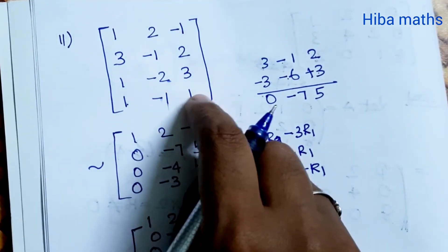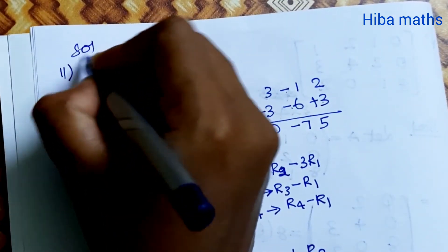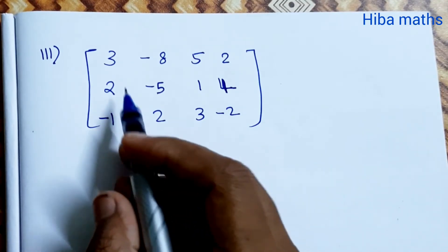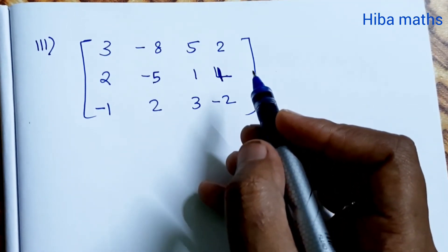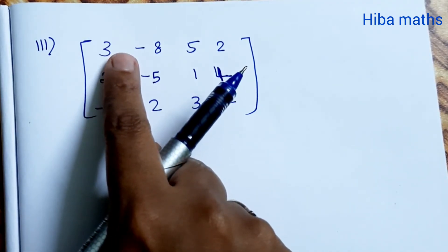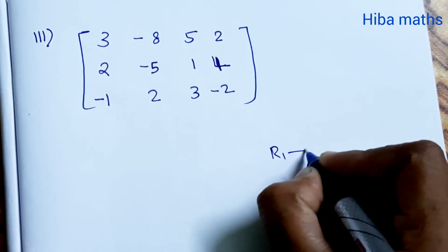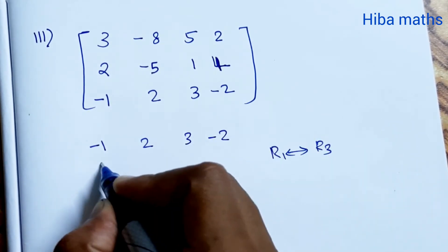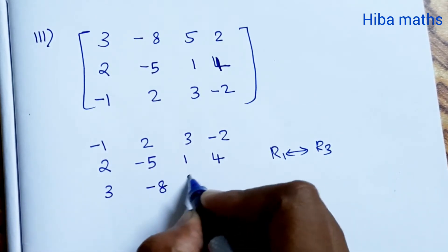Now let A equal to the next matrix. Start directly with the calculations. The last row is [3, -8, 5, 2; 2, -5, 1, 4; -1, 2, 3, -2]. In the first column we have -1, so R1 interchanges with R3. After interchange: first row is -1, 2, 3, minus 2. Second row stays: 5, 2.